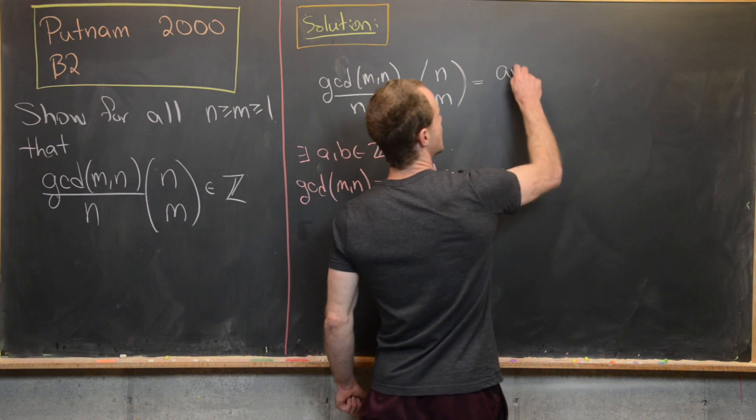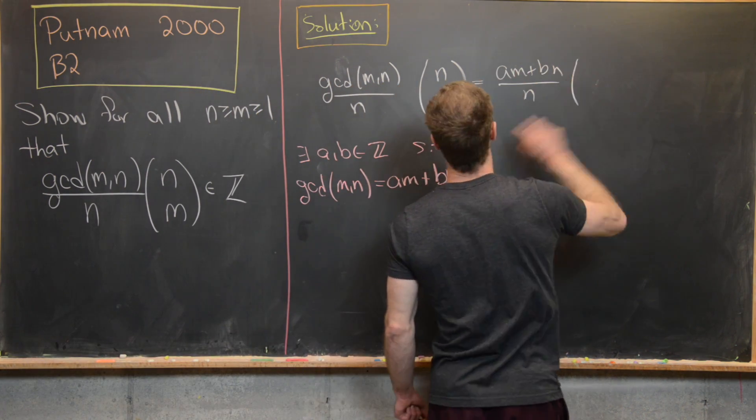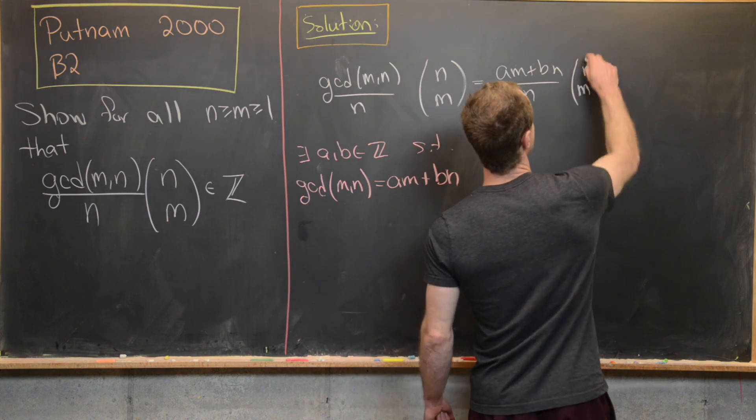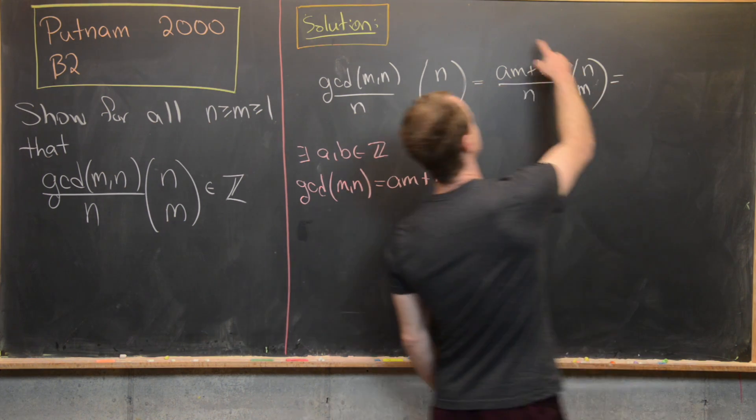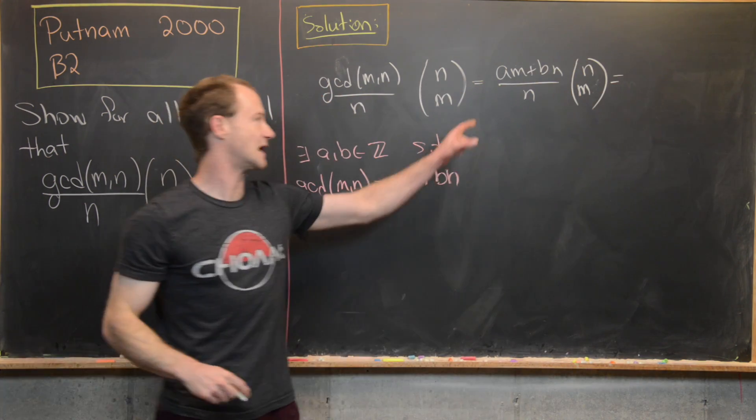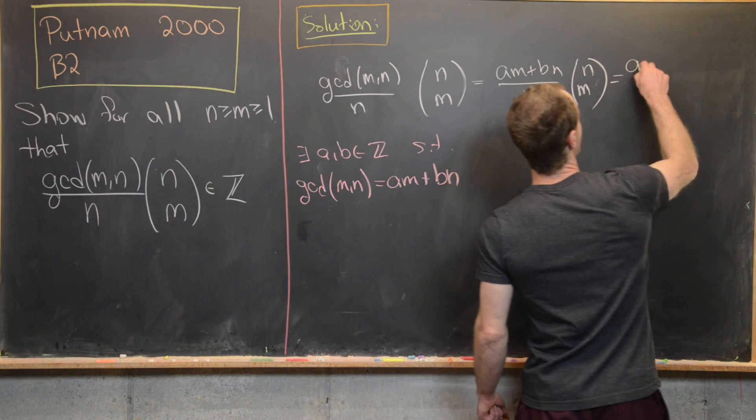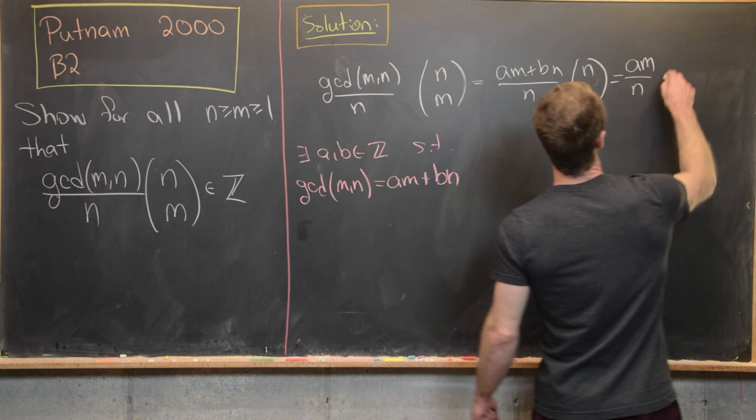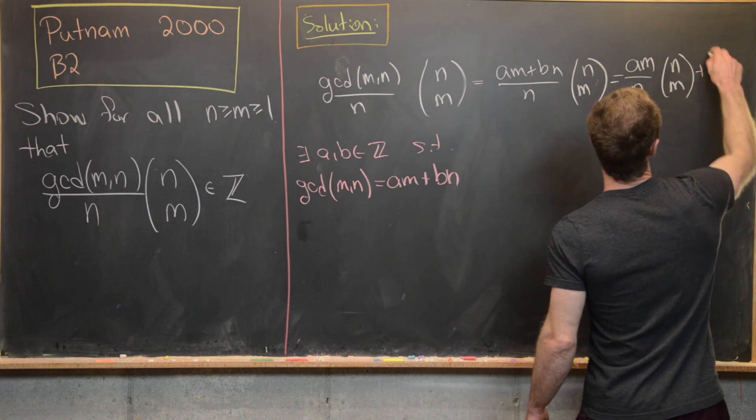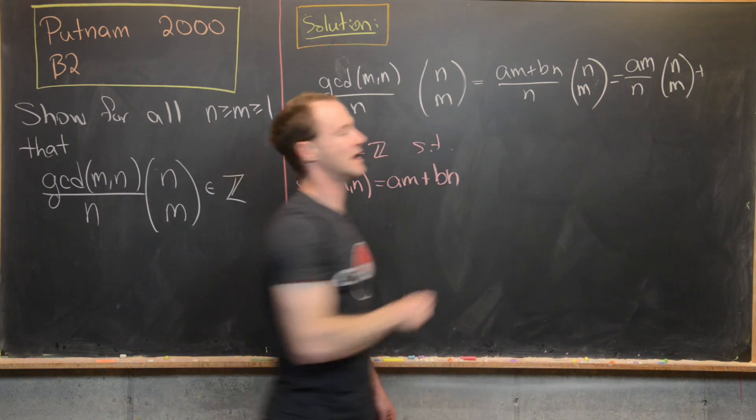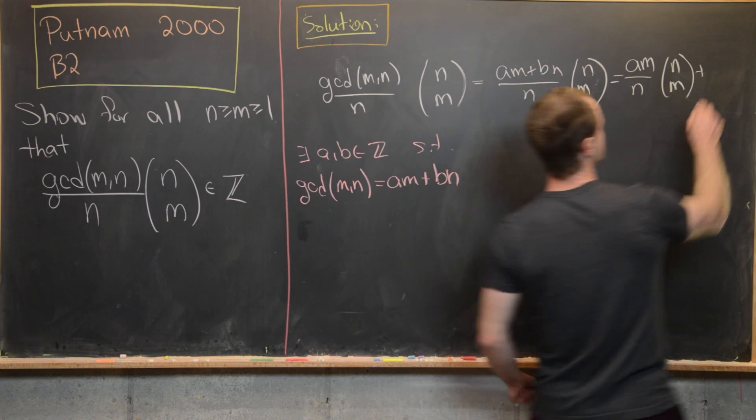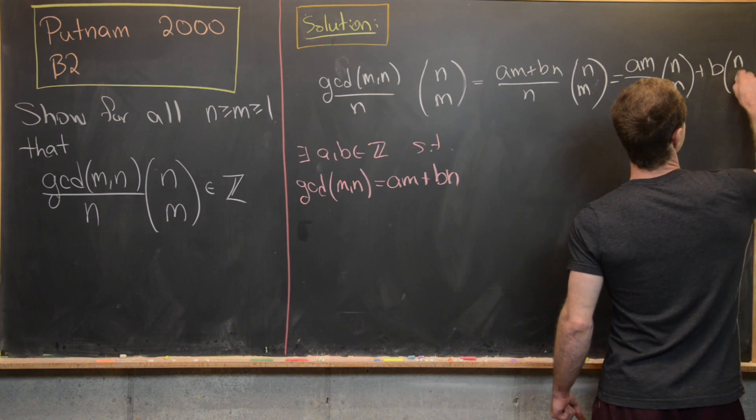So let's see what that does for us. We have (am + bn) all over n times the binomial coefficient (n choose m). So we can separate this fraction into parts and maybe distribute onto the binomial coefficient as well. So we have am/(n × (n choose m)) plus bn/n. But that's just going to be b × (n choose m).